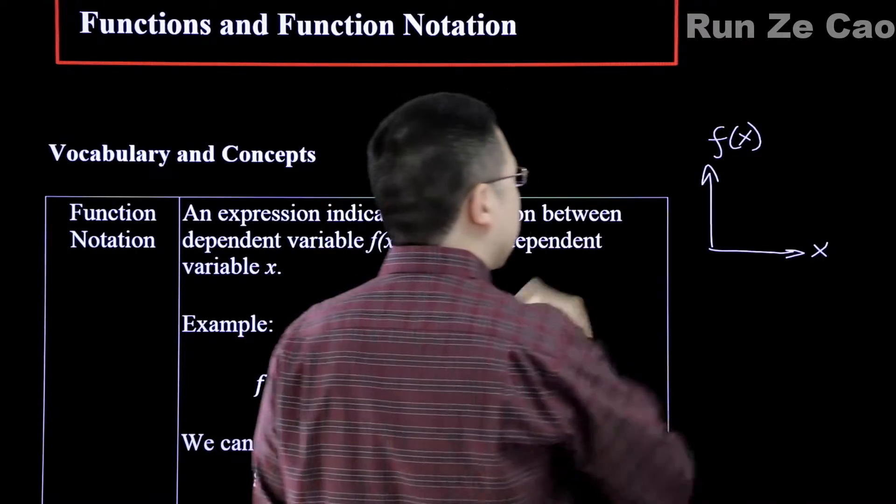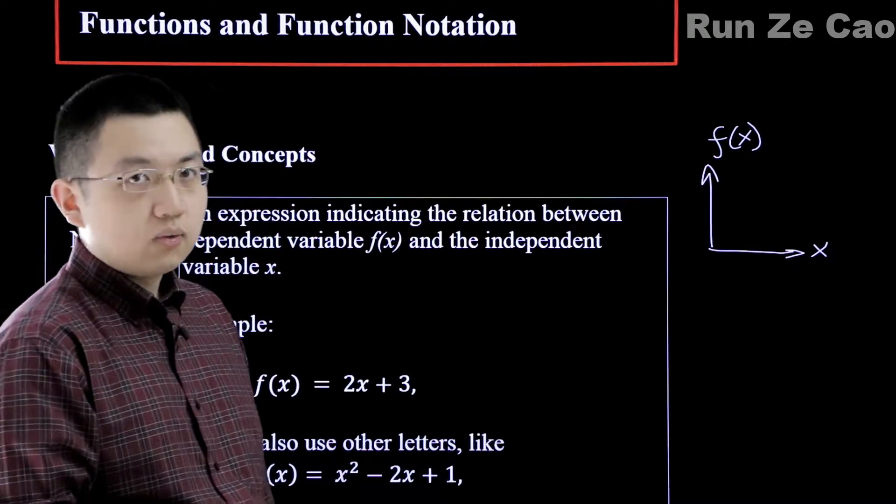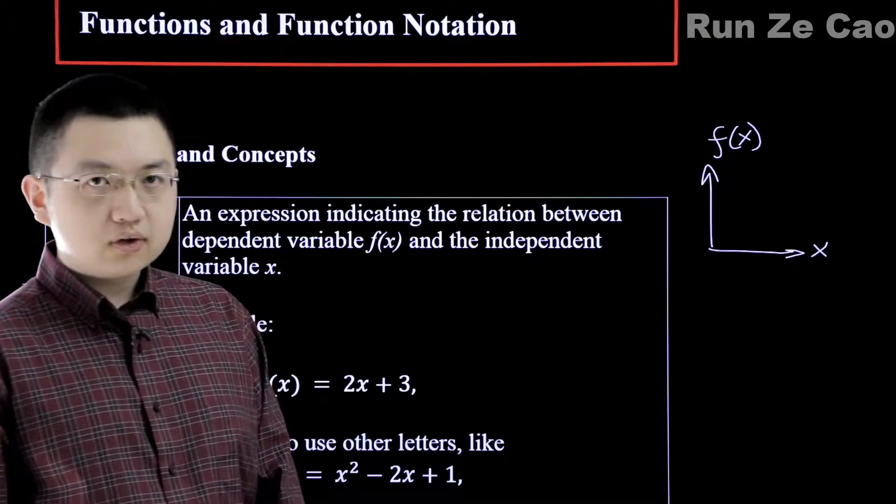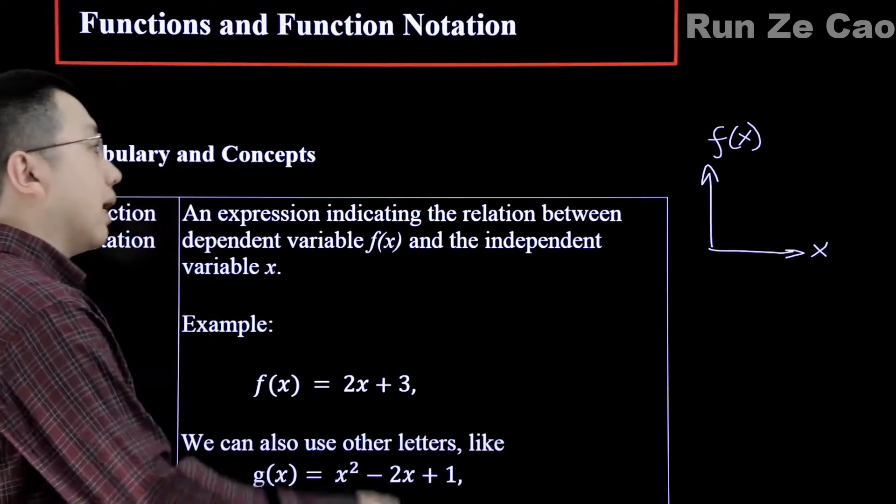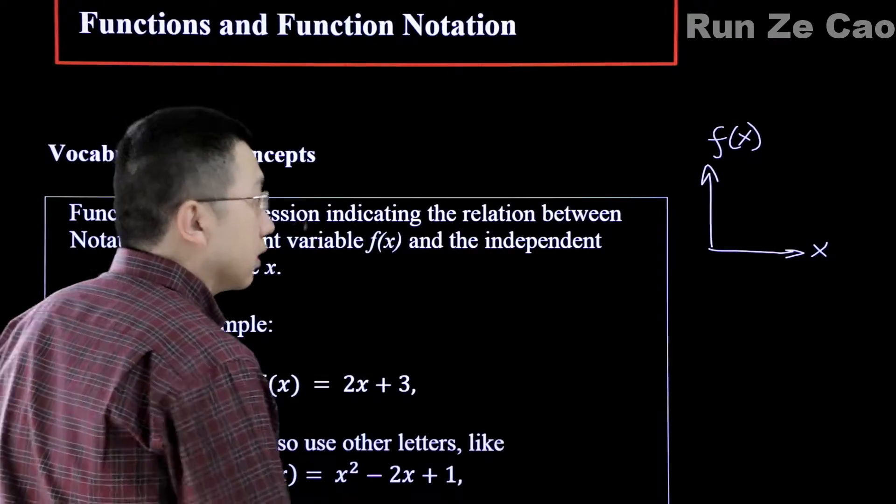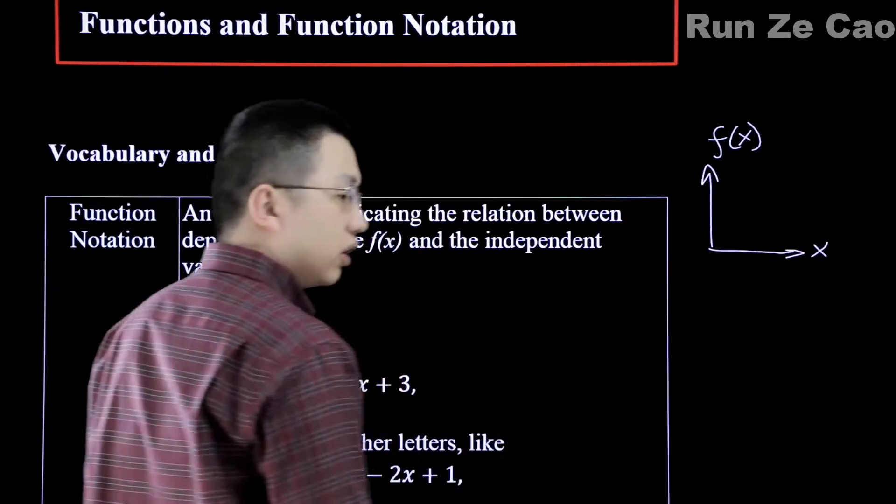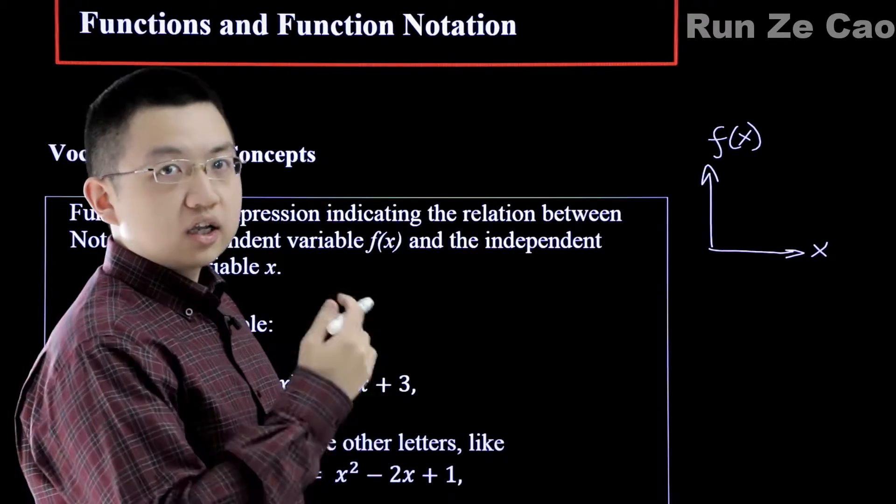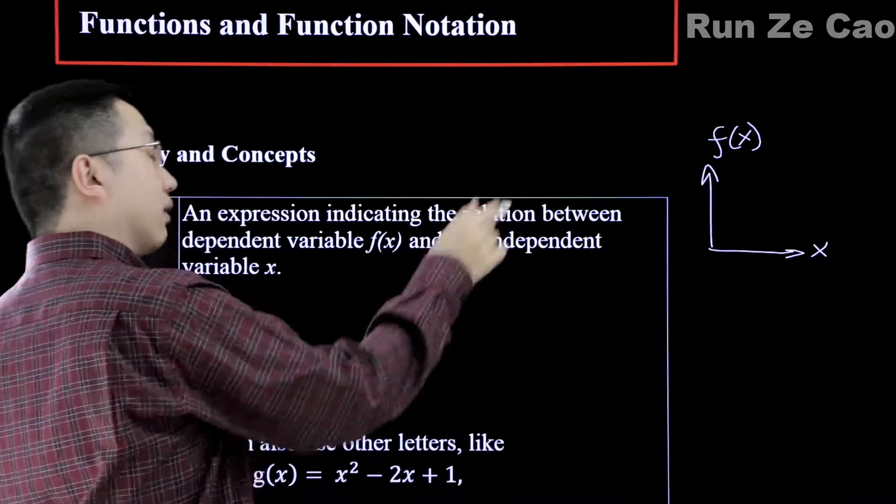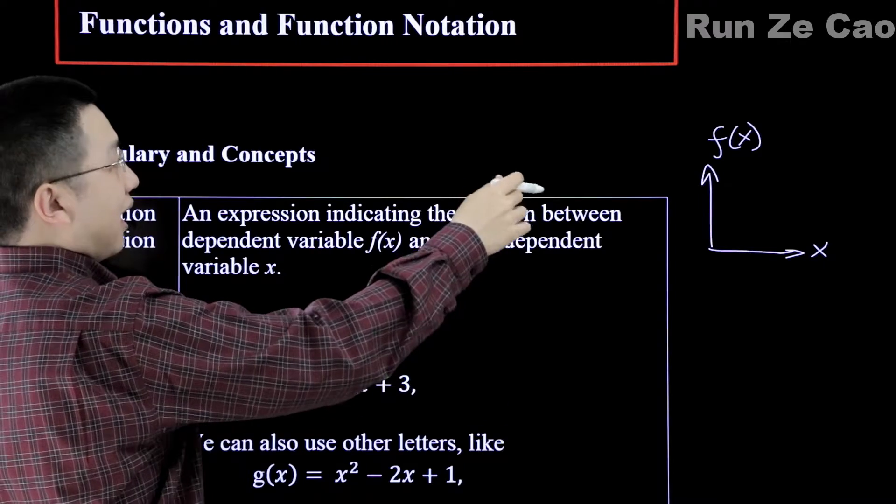So this isn't going to be y anymore, unless we set y equals f(x) or y equals g(x) as well. Because if we want to plot g(x) and f(x) on the same coordinate grid, we're going to need to have y or f(x) and g(x).